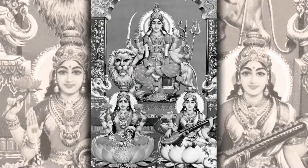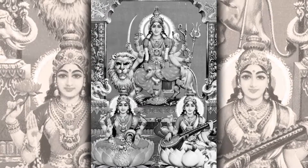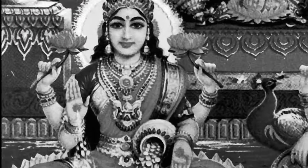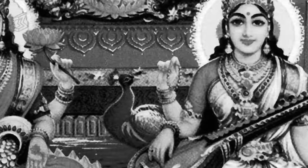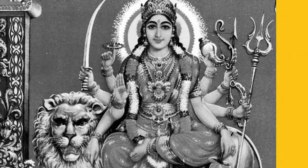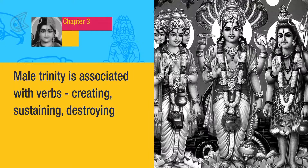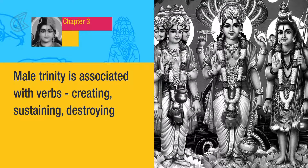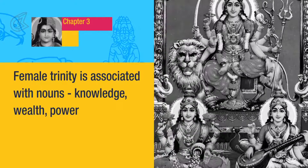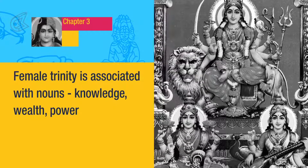This image here visualizes the Hindu female trinity. Lakshmi, Saraswati, and Shakti embody wealth, knowledge, and power. Lakshmi is dressed in red and holds a pot. Saraswati is dressed in white and holds a lute. Shakti holds weapons and rides a lion. If one observes these images carefully, the male trinity is associated with verbs — creating, sustaining, destroying — while the female trinity is associated with nouns: knowledge, wealth, power.